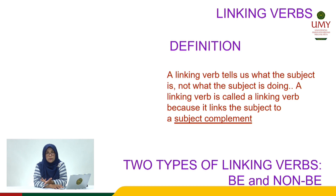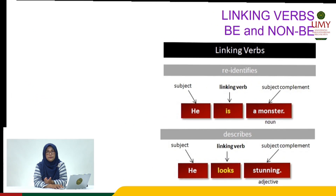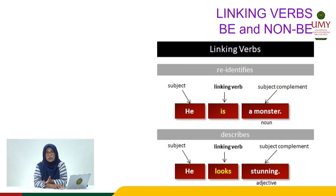What are the differences between these two linking verbs? In the example 'He is a monster,' the word 'is' is called a linking verb B. On the other hand, in the example 'He looks stunning,' the word 'looks' is called a linking verb non-B. Their function in the sentence is to tell about the subject.